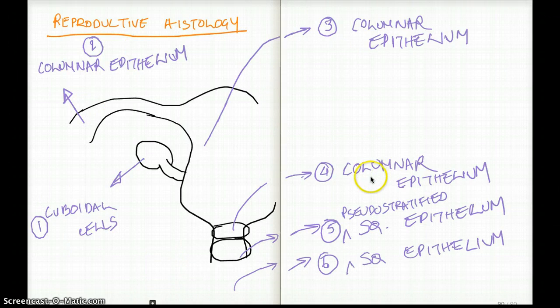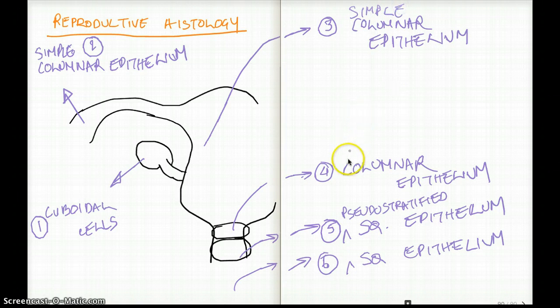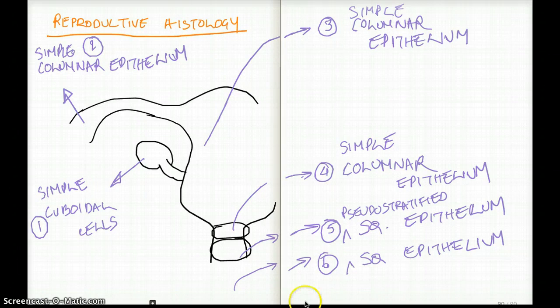What about the rest? What about them? They're just simple columnar cells. As a result, they're going to be simple for every one of them. They're just simple columnar cells. So just add the word simple. And again, we can add simple here, simple cuboidal cells, because they're not going through as much abrasion as the ectocervix and the vagina.